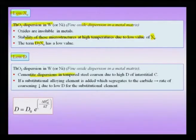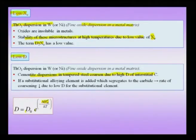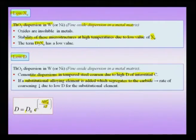Cementite dispersions in tempered steel coarsen due to the high diffusivity of interstitial carbon: D = D₀ exp(−ΔHm/kT), where ΔHm is the migration enthalpy of carbon between interstitial sites. Fine carbides give high hardness but tend to coarsen because carbon diffuses easily through the matrix. Adding a substitutional alloying element that segregates to the carbide reduces the coarsening rate, because now not only carbon but also the alloying element must diffuse.